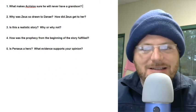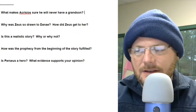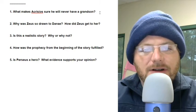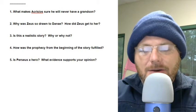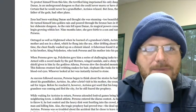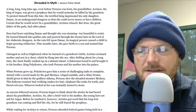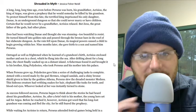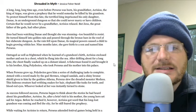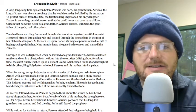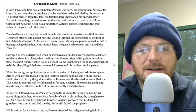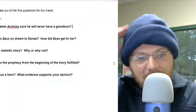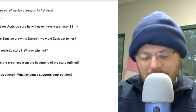Let me give you one example here — I always like to lay it out so you guys can see what I'm looking for. The first question is: what makes Acrisios so sure he will never have a grandson? We have to go back to the beginning of the story. So, Acrisios — I'm just going to scan the first paragraph here. His grandfather, the king of Argos, was given a prophecy that he would someday be killed by his grandson. To protect him from this fate, the terrified king imprisoned his only daughter, Danae, in an underground dungeon so that she could never marry or have children. Certain that he would never be a grandfather, Acrisios relaxed.